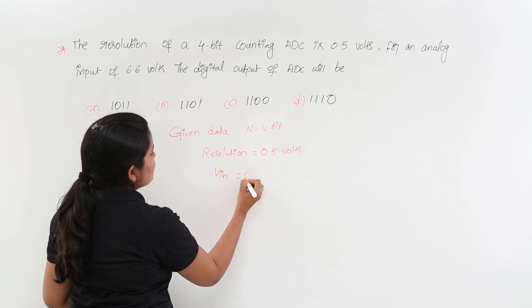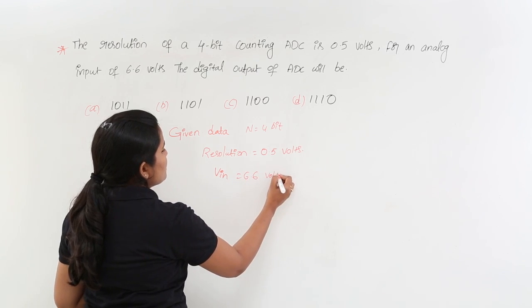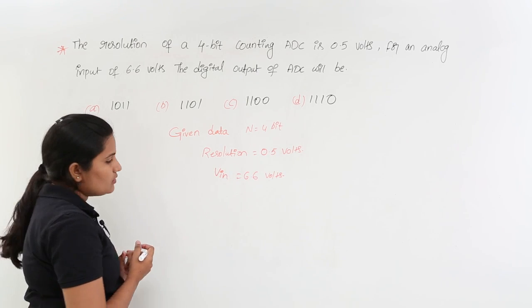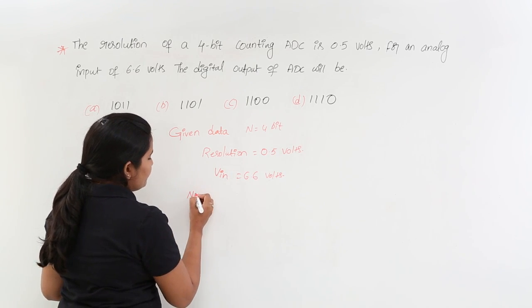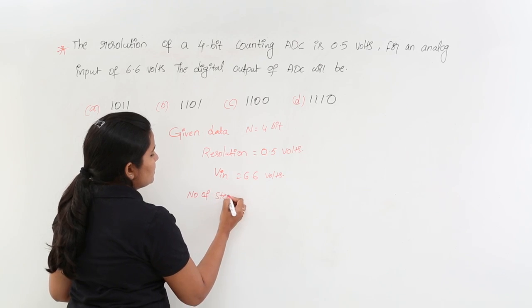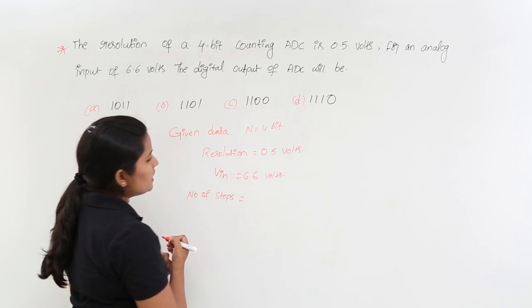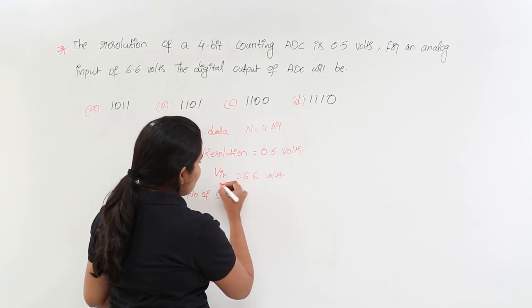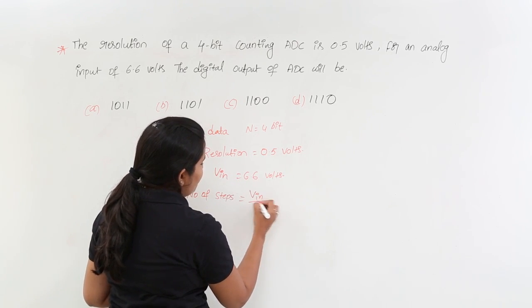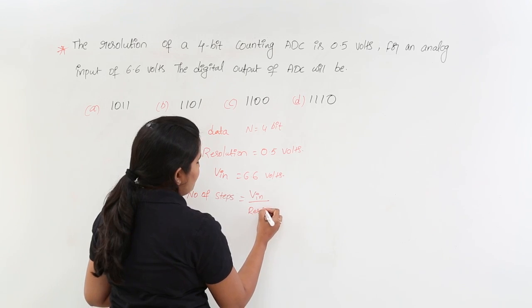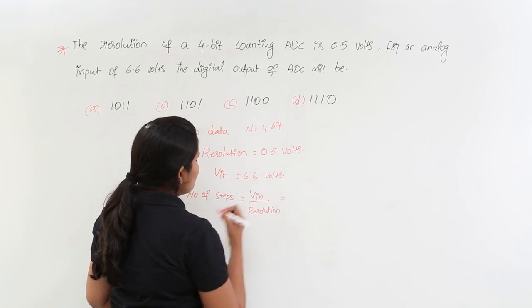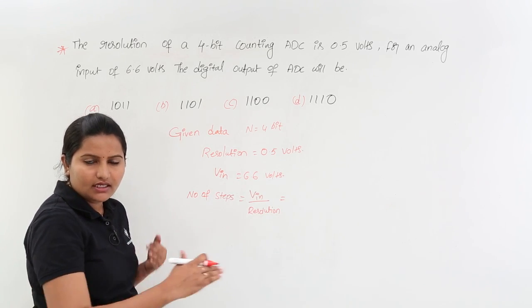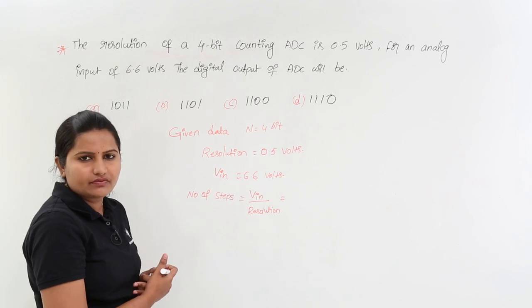That means Vin is given as 6.6 volts. Now you know the formula: the number of steps is equivalent to Vin divided by resolution. If you know number of steps, then definitely that many number of digital bits will be there.